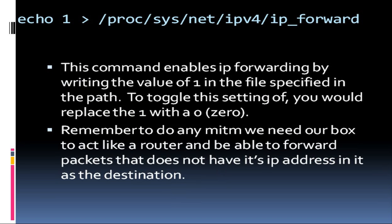The first command we entered was the echo command. Basically, I'm just echoing the value of 1 to this config file. This is an IP forward file, and all it does is turn on or enable IP forwarding on your Linux box — in other words, it allows your Linux box to act like a proxy. You can do the same thing in Windows; it's a registry edit. Remember, to do a man-in-the-middle, we have to have our box acting like a router so that it can forward packets.